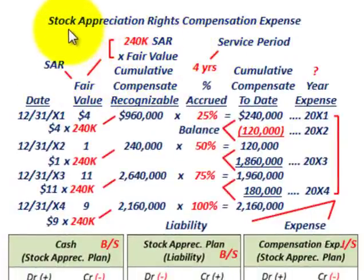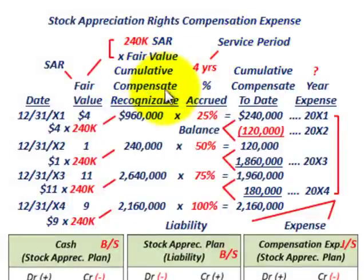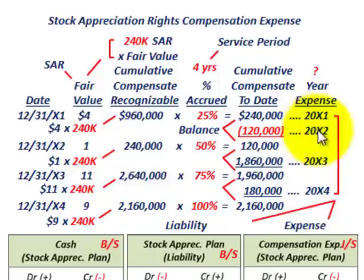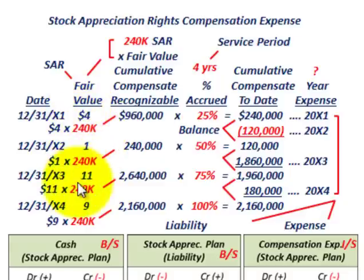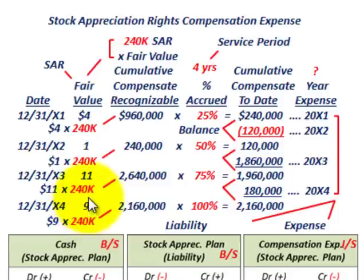We need to calculate the compensation expense on a yearly basis using a table laid out for years 20X1 through 20X4. First, we determine the cumulative compensation recognizable each year by multiplying the 240,000 SARs by the fair value per SAR. Year X1: $4 × 240,000 = $960,000. Year X2: $1 × 240,000 = $240,000. Year X3: $11 × 240,000 = $2,640,000. Year X4: $9 × 240,000 = $2,160,000.